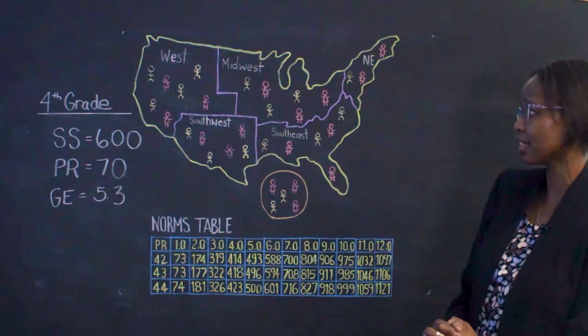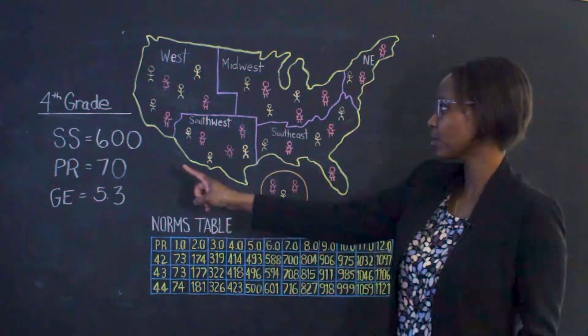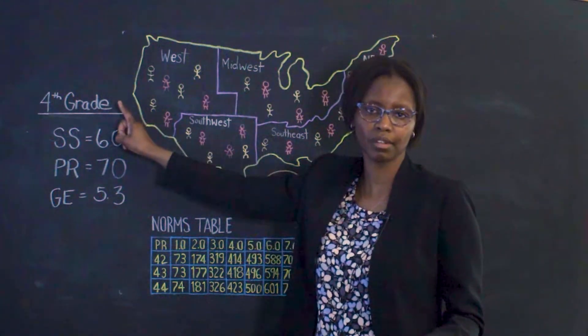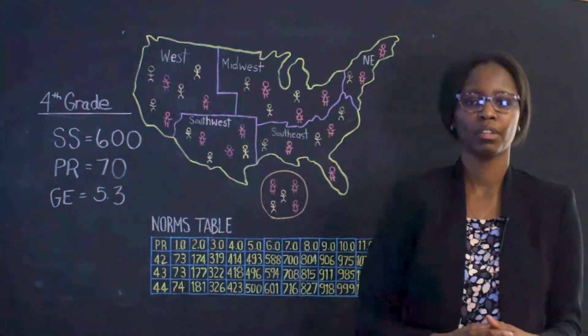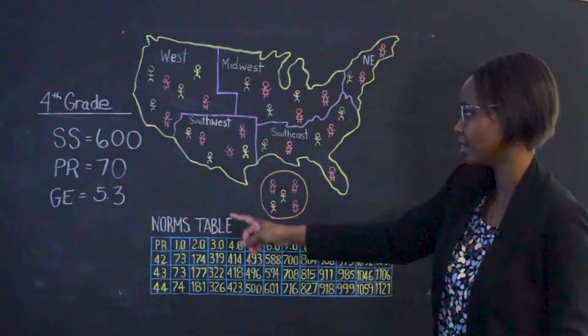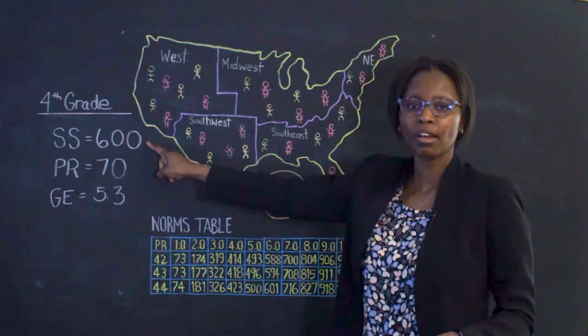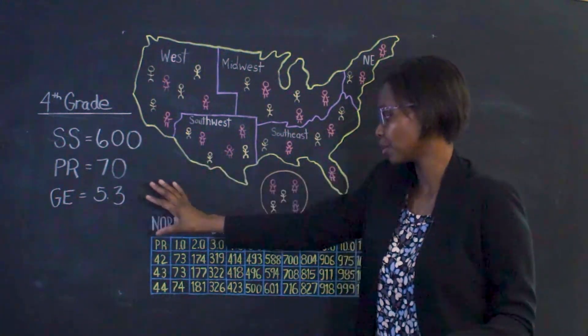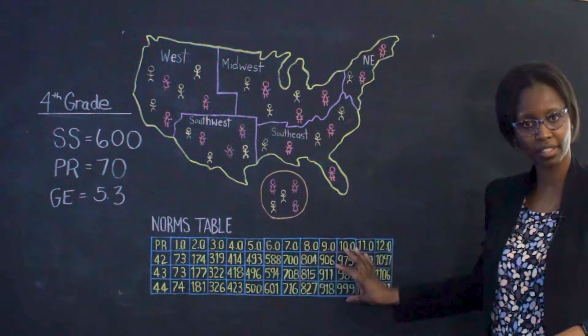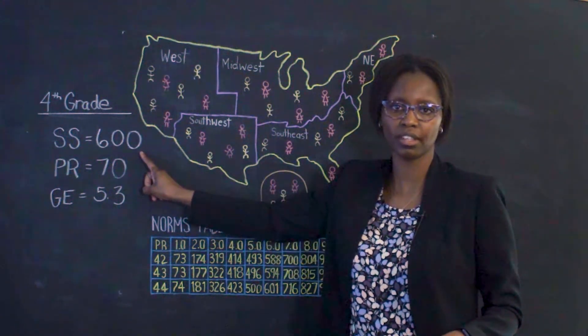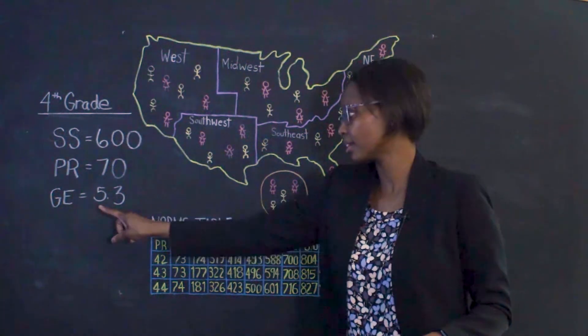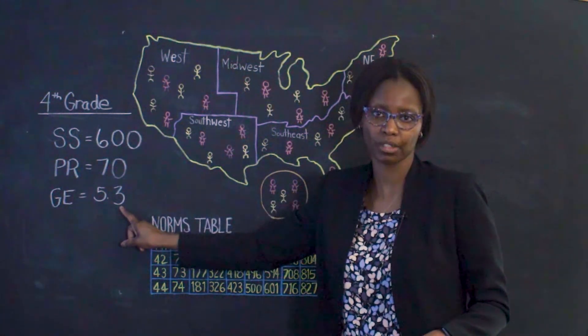So, let's take an example of a fourth grader. This fourth grader has tested in the month of February in fourth grade. Their skilled score, let's say in reading, was 600. We look at our norms table, which would look something like this, and determine that that skilled score of 600 has a percentile rank of 70 and a grade equivalent of 5.3.